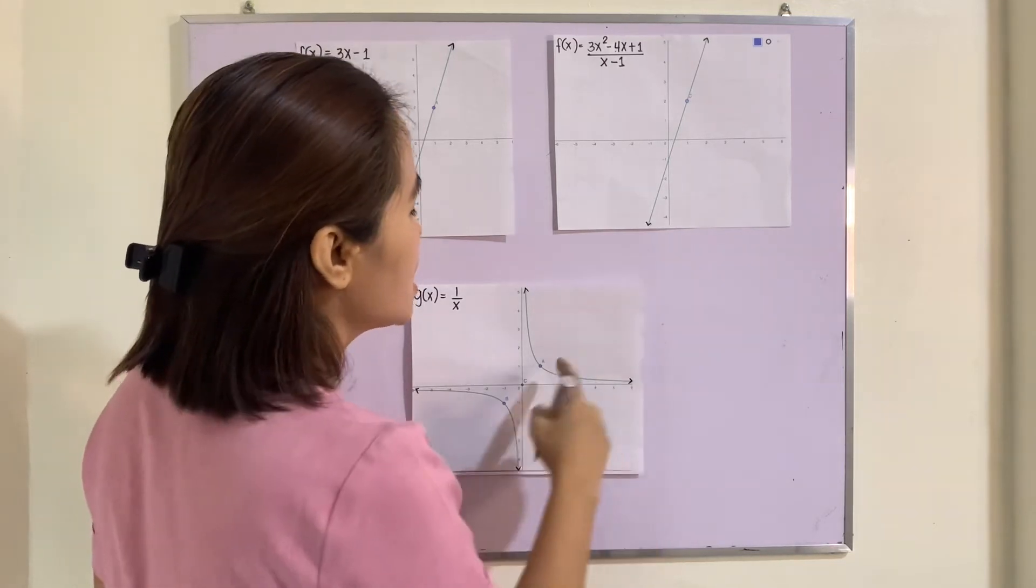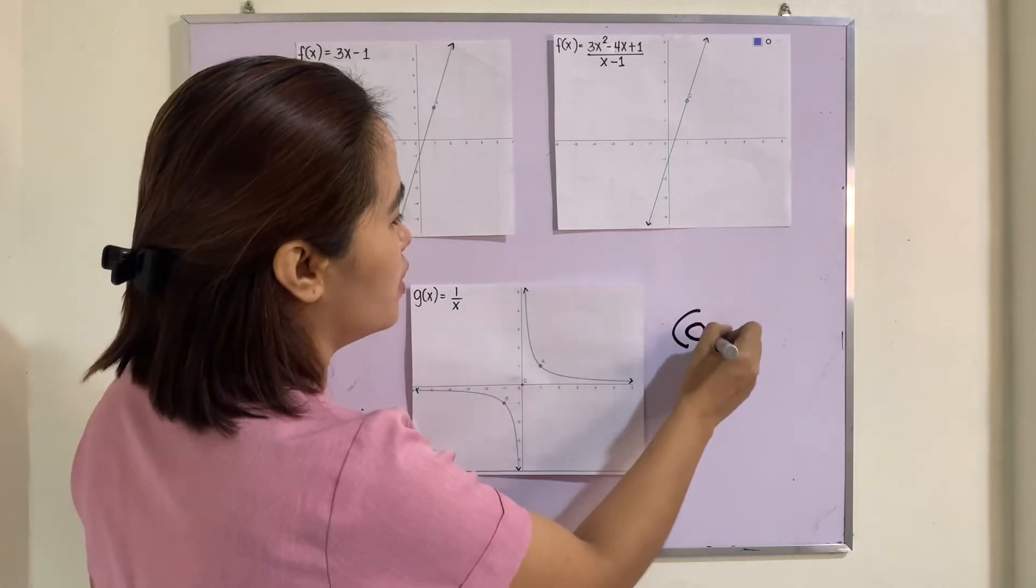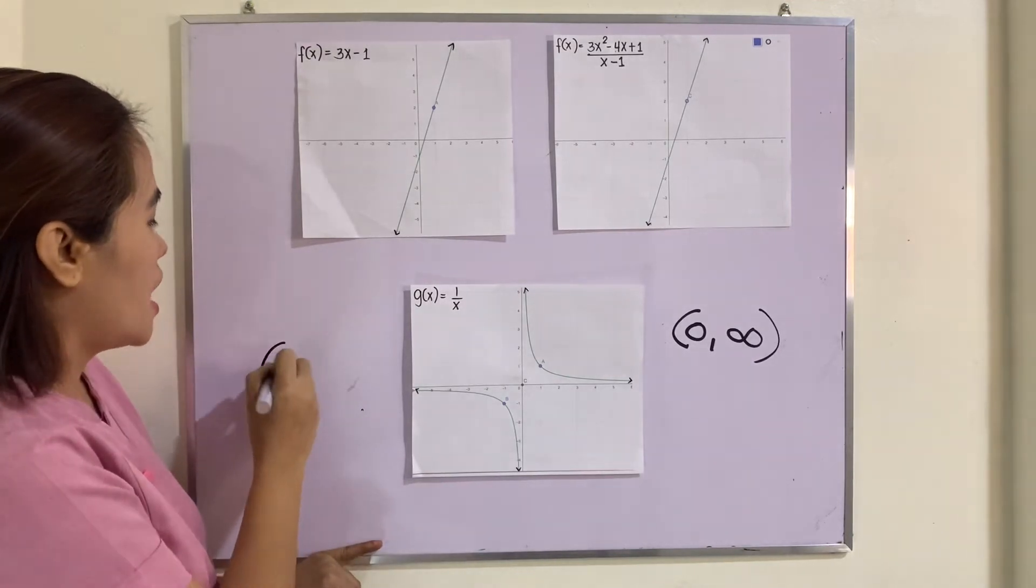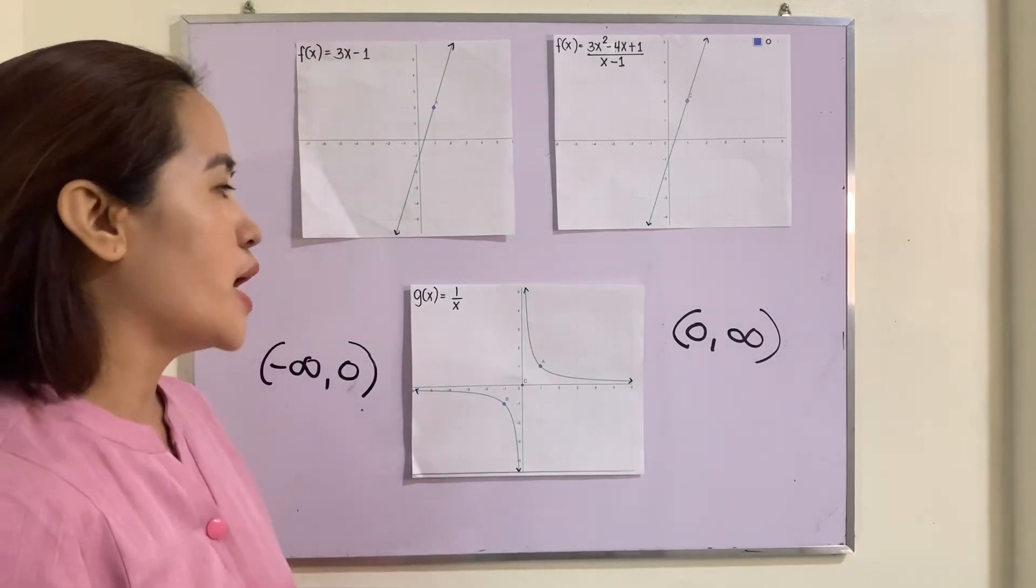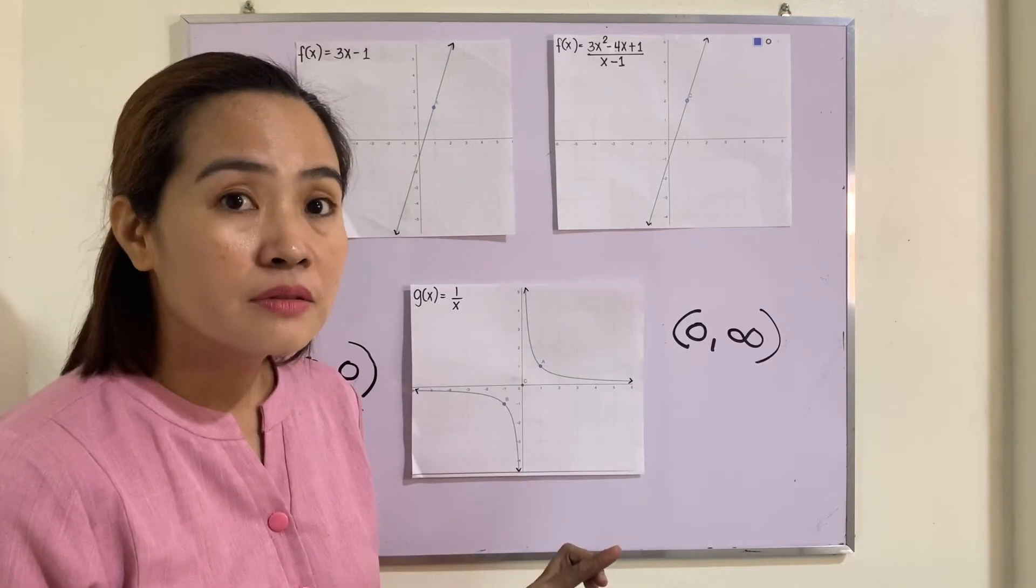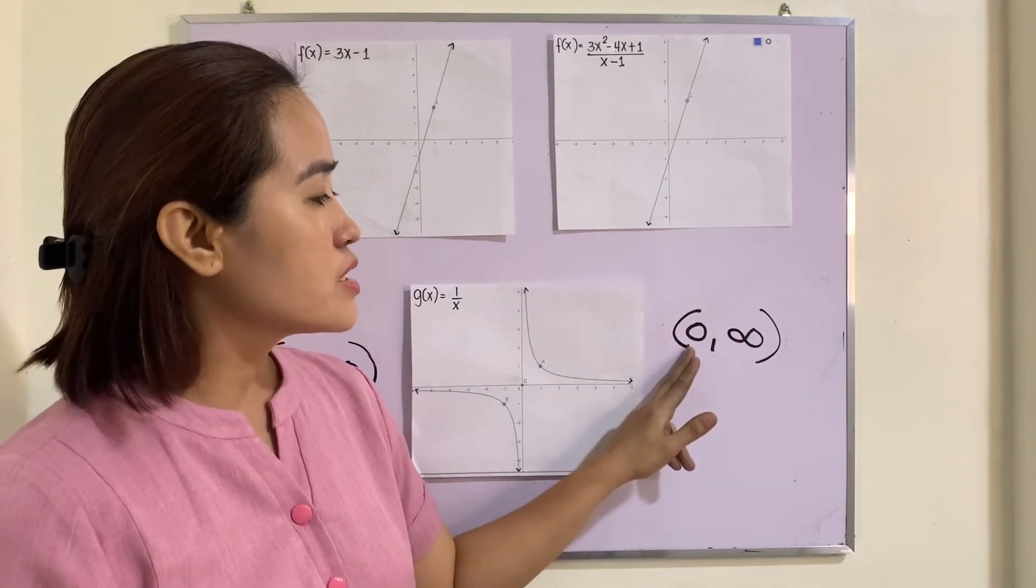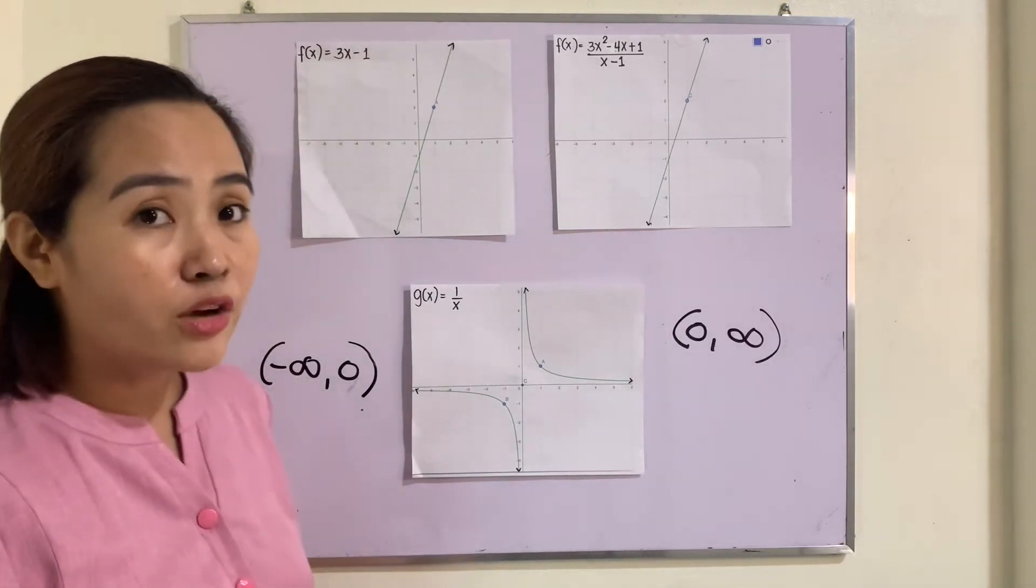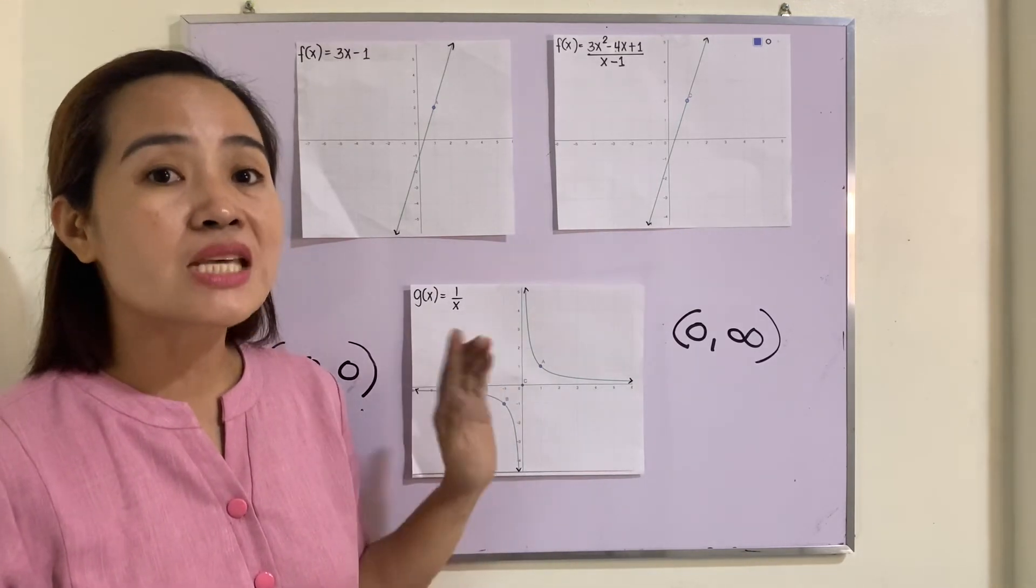This is continuous at x = 1 because as you can see, this is from 0 up to positive infinity. Same as here, this is negative infinity up to 0. You can trace the graph of this function without lifting the pen. So that is with regards to this interval 0 to positive infinity and negative infinity to 0.